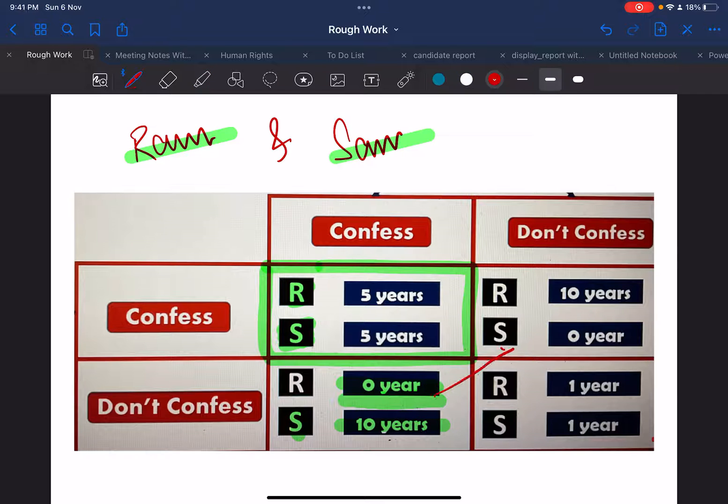Vice versa, it tells to the other prisoner, and it says that in case if Ram goes quiet, then Ram will get 10 years, and in case if Sam confesses, then Sam will get zero years. So I hope you understood these two opposite things - if one confesses they get zero, and if another one is quiet they get 10 years.